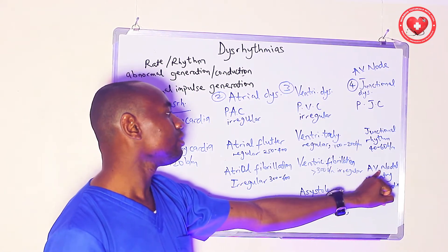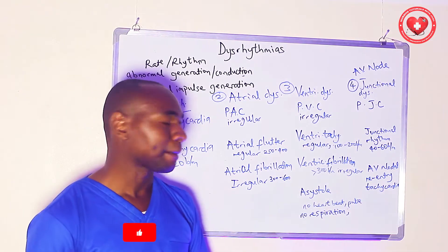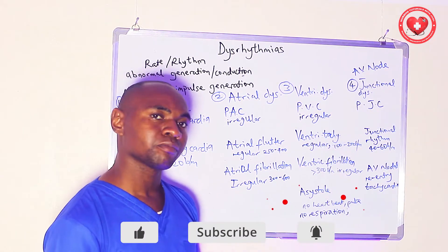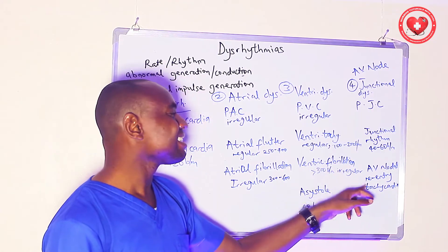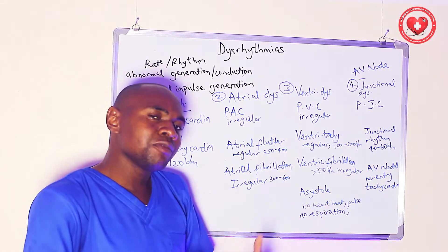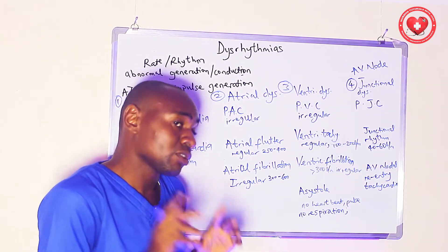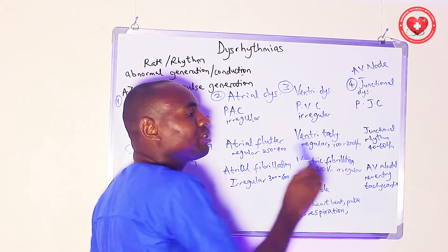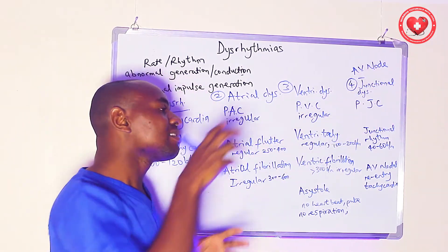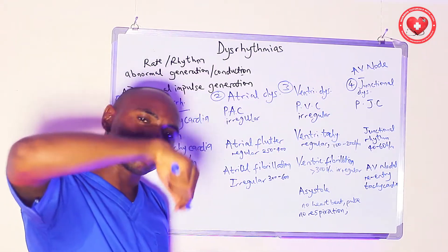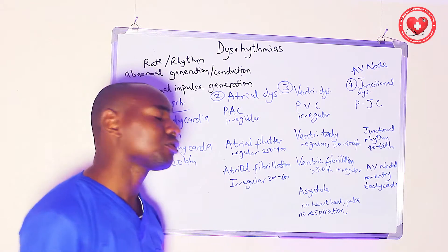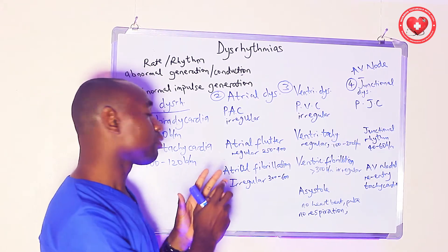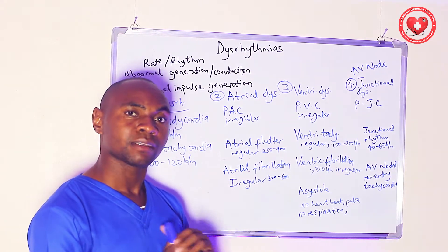Finally, we have AV nodal re-entry tachycardia. Breaking it down: 'atrioventricular nodal' means it originates from the AV node, and 're-entry tachycardia' means the AV node releases electrical impulses at a fast rate, and those impulses travel round and round the atrium, with only a few conducted to the ventricles. This covers the abnormalities of impulse generation that cause dysrhythmias.